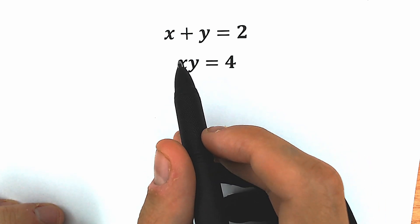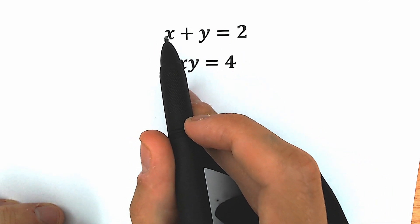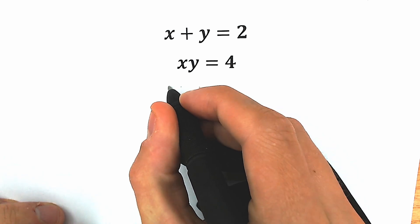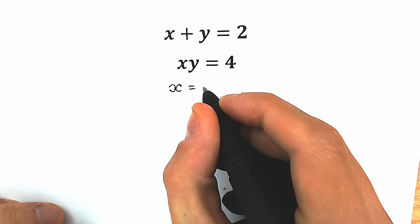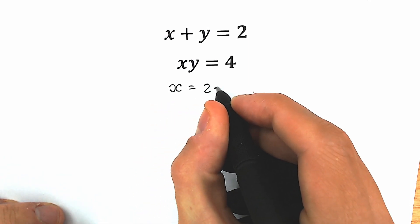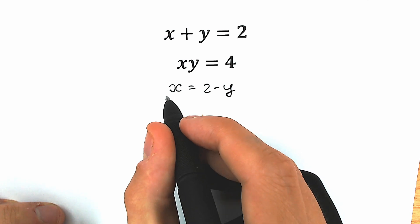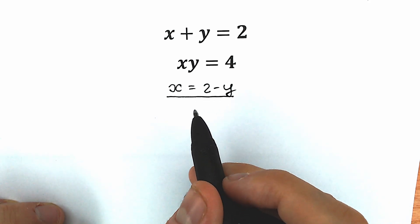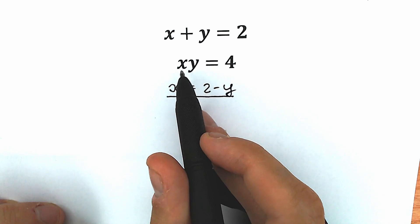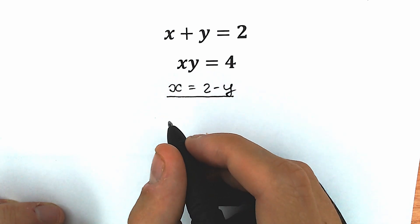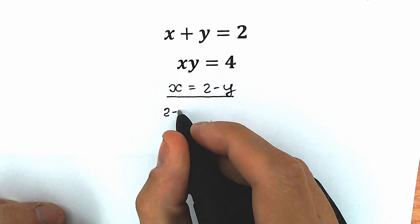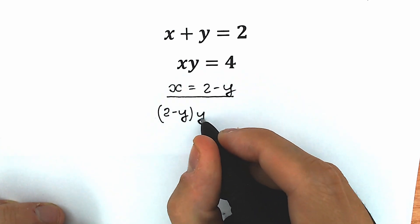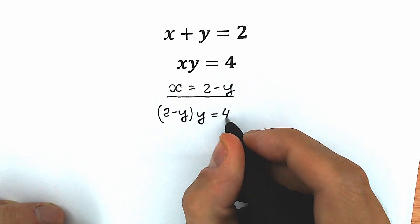First of all, let's express x from the first equation. So our x will be equal to 2 minus y. This is our main equation — we really need this. Right now let's plug in this x into the second equation. So we have 2 minus y, times y, equals 4.